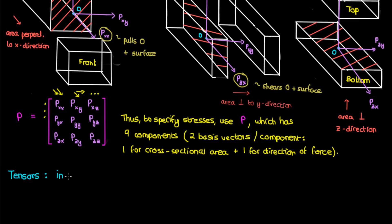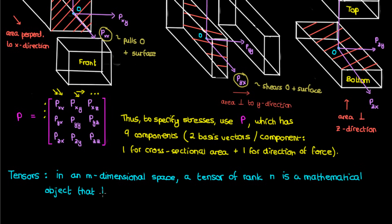Now all three of these mathematical objects that we talked about have something in common—they're all something we call tensors. If we're in an m-dimensional space, a tensor of rank n is a mathematical object that has n indices, m to the power n components, and it obeys certain transformation rules.